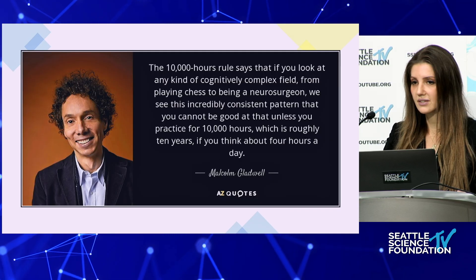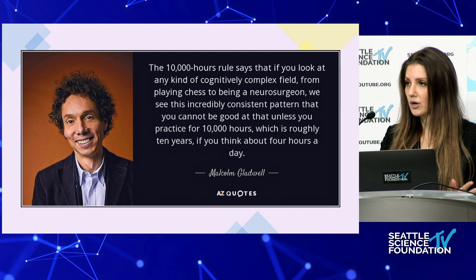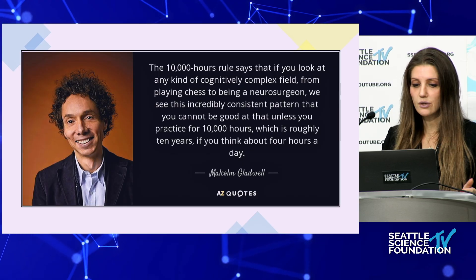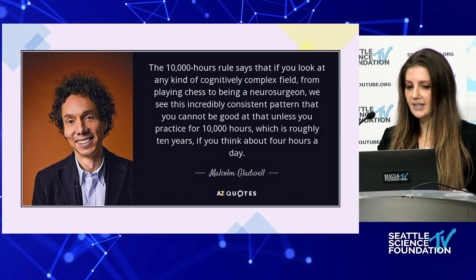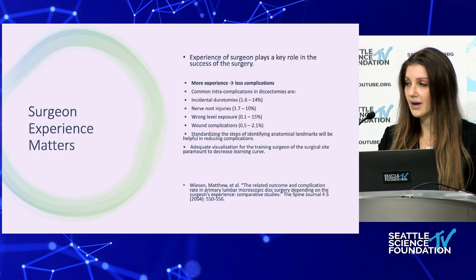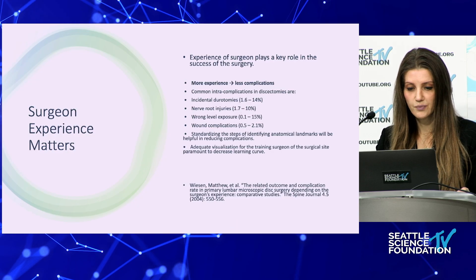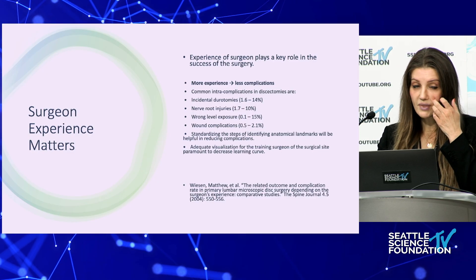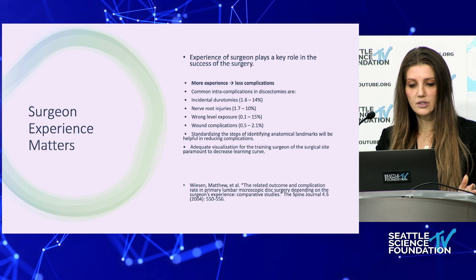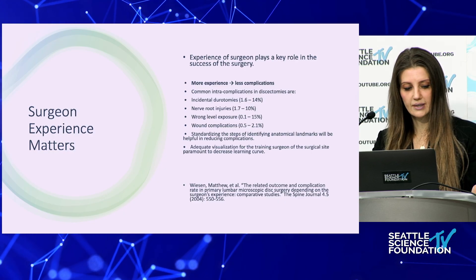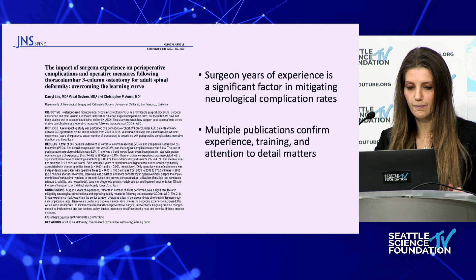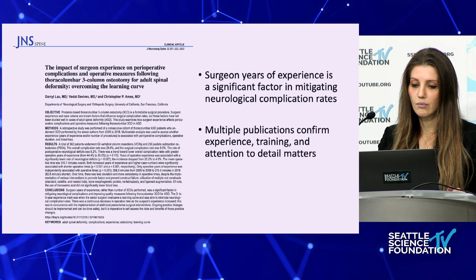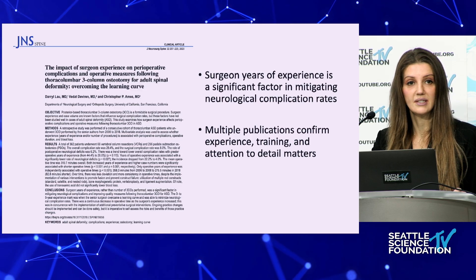We've all put in our reps learning spine surgery and becoming competent in our trade. However, robotics is a different tool, and we also have to become competent using different technologies. The 10,000-hour rule applies, and surgeon experience really does matter — the more experience we have, the fewer complications we'll get. We have common intraoperative complications such as neurotomies, nerve root injuries, and long-level exposures. These aren't going to be reduced by robotics — the robot is a tool and augment to appropriate surgical technique. Surgeon years of experience is a significant factor in mitigating neurologic complications, and training and attention to detail matter most.